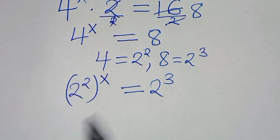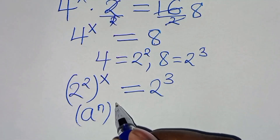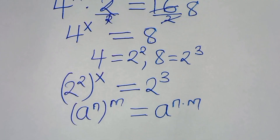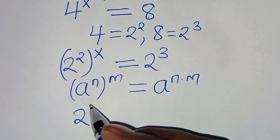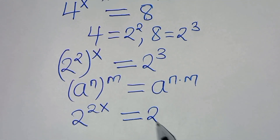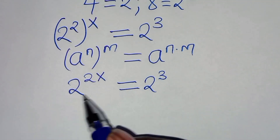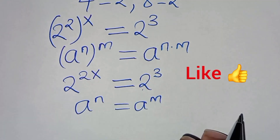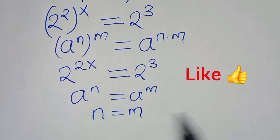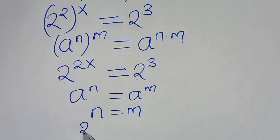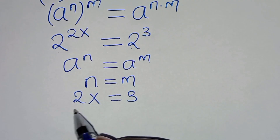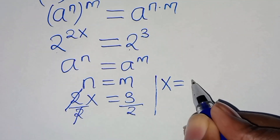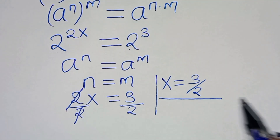Now, 2 to the power 2 raised to the power x equals 2 to the power 3. This is in the form of a^n raised to the power m, which we can express as a raised to the power n times m. Applying this exponent property, this becomes 2 to the power 2x equal to 2 to the power 3. Given that the bases are common, the exponents must be equal, so 2x equals 3. Dividing both sides by 2, x is equal to 3 over 2. This is the value of x by method 1.